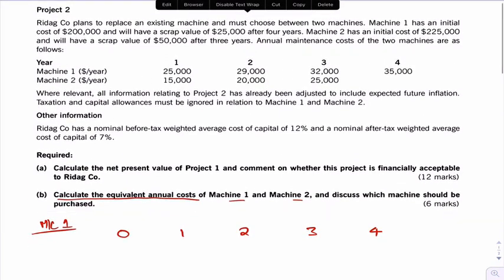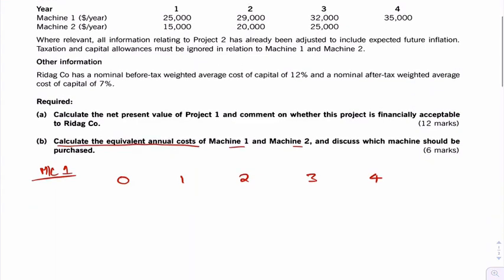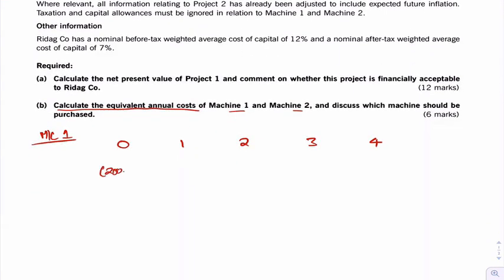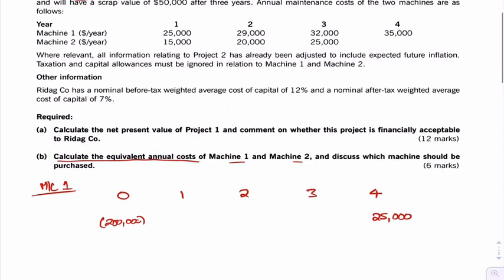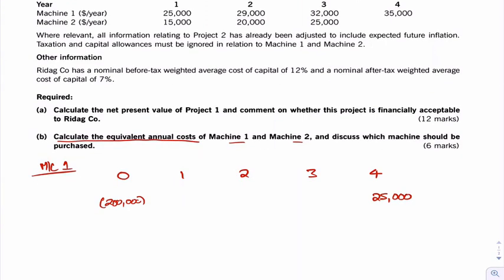So what does it tell us about machine 1? They plan to replace an existing machine. Machine 1 has an initial cost of 200 and a scrap value of 25. So the initial cost, 200,000 and a scrap value in year 4 of 25,000. Then we have some annual maintenance costs of 25,000, 29,000, 32,000 and 35,000.